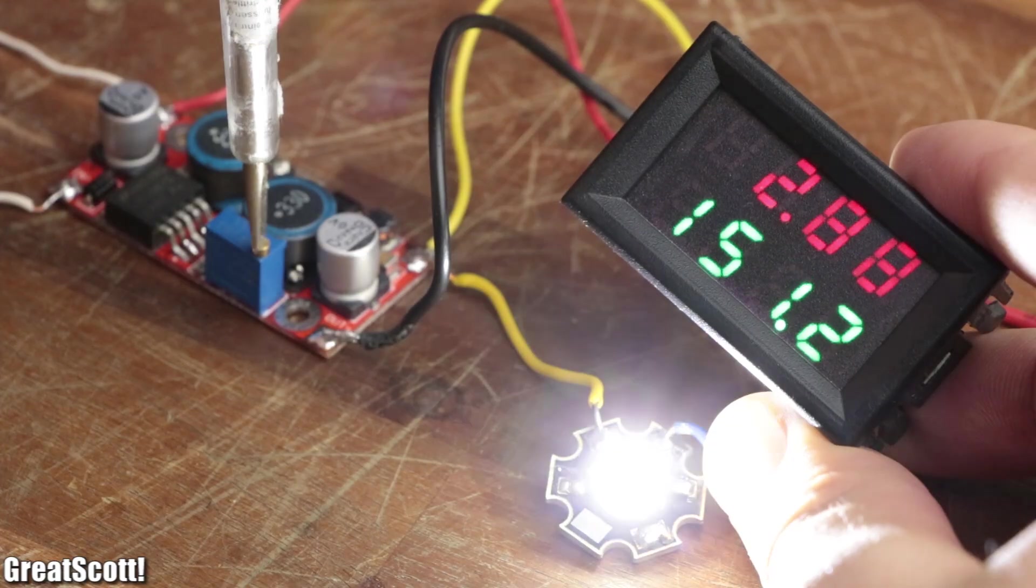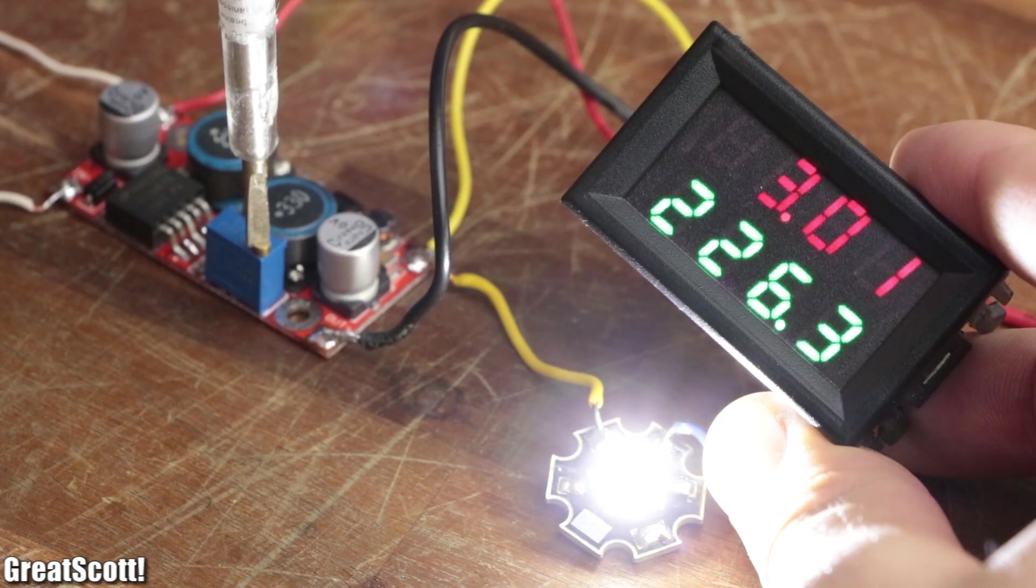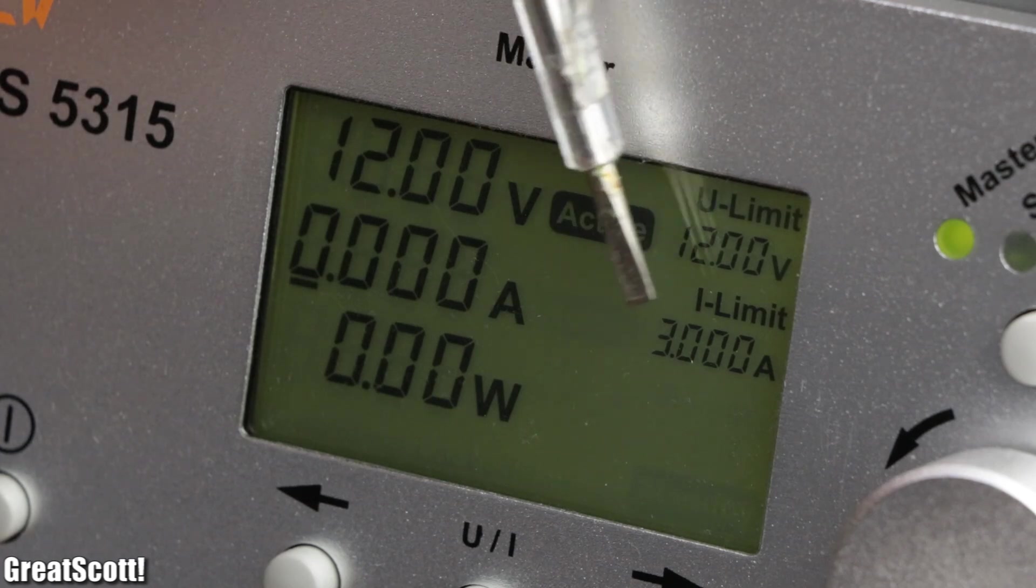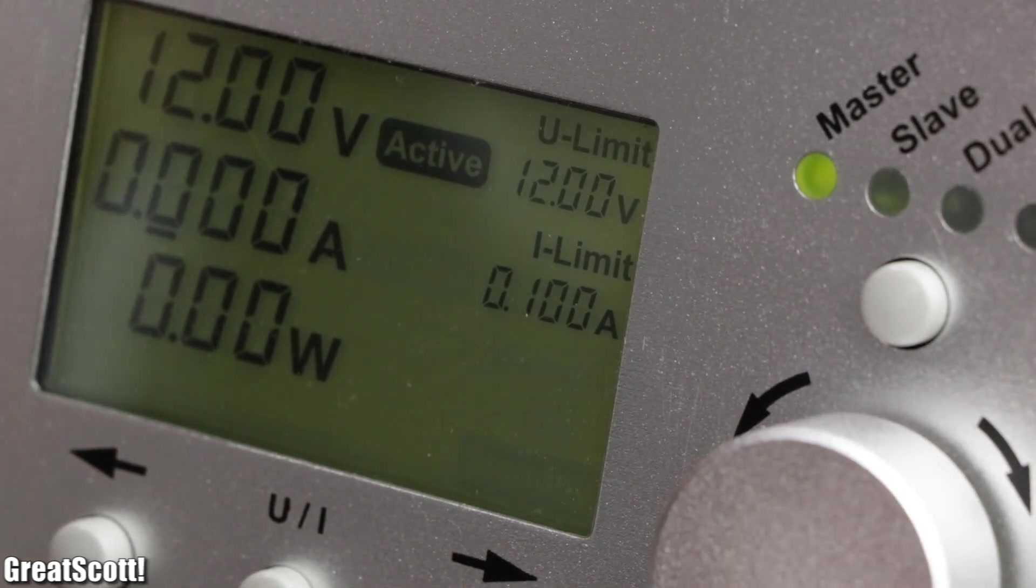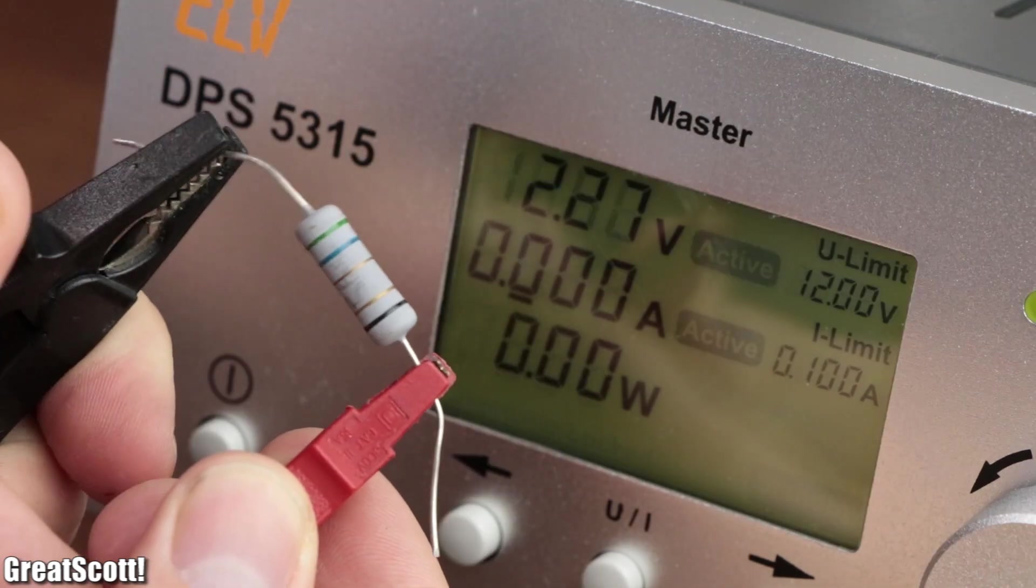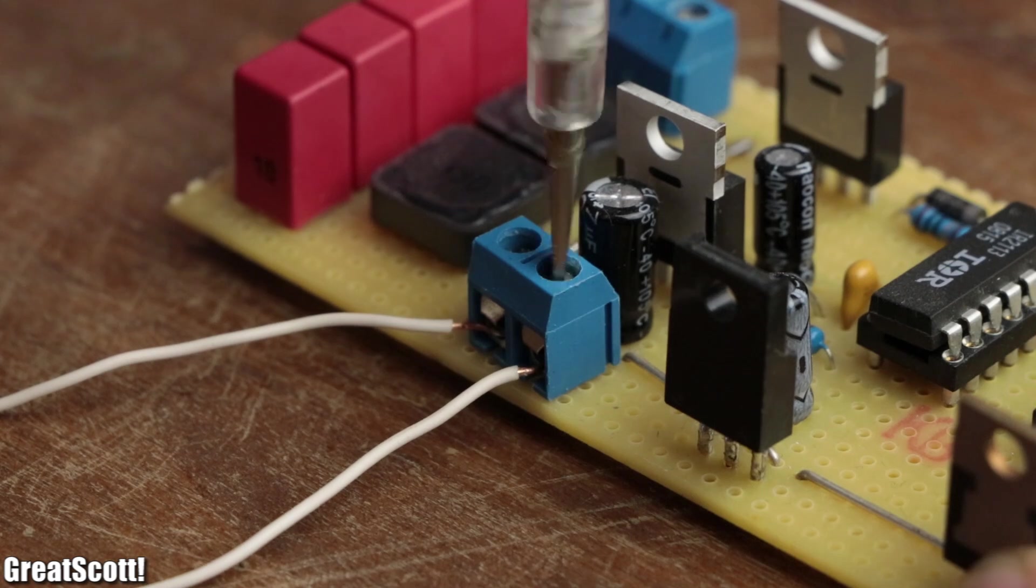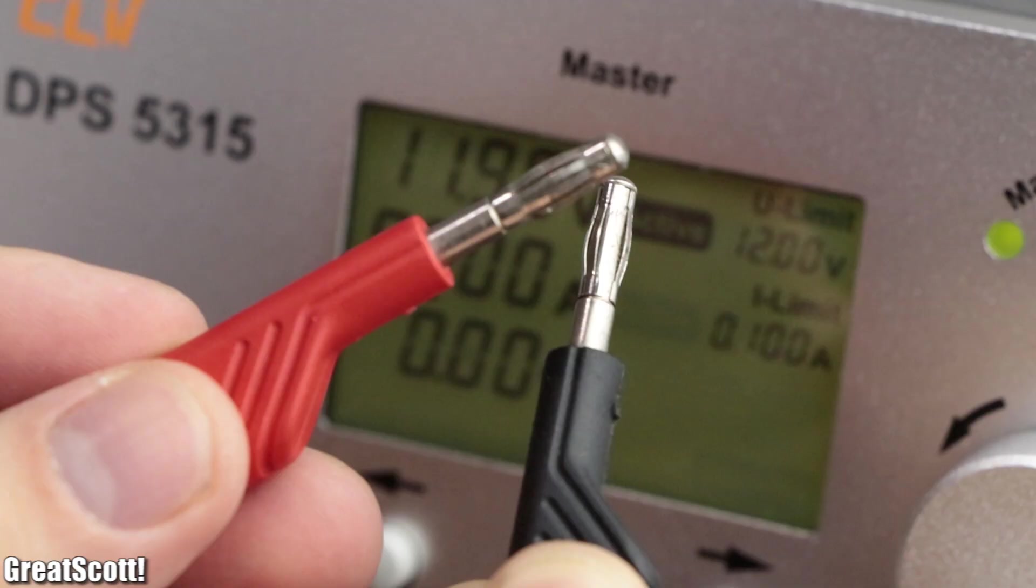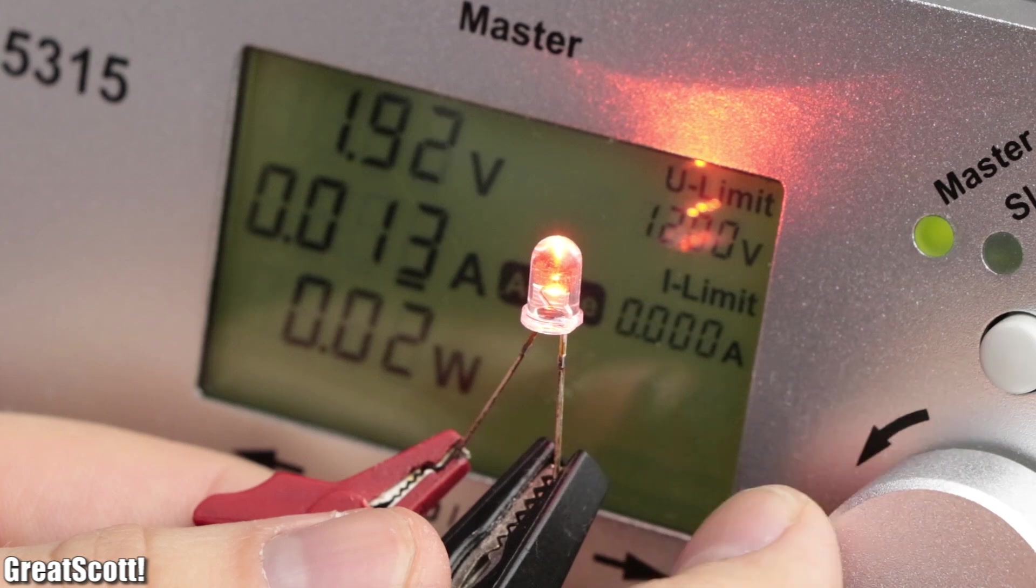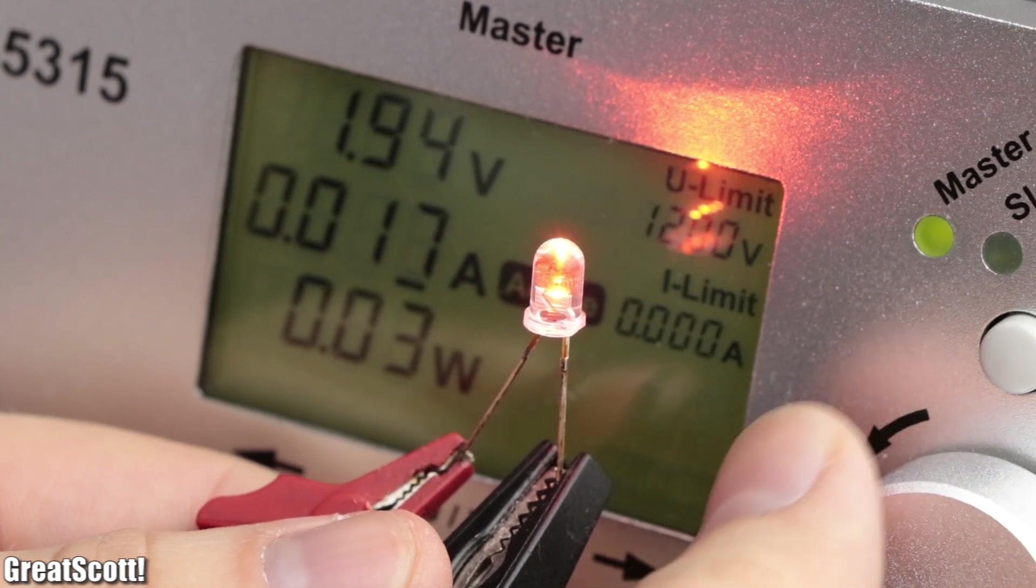The only remaining advantage a proper lab bench power supply has is its current limit feature. That means I can set a maximum output current, which no matter what load I attach will not be exceeded. By doing so you can save your faulty circuit from destruction, prevent short circuits, and can even use it as a constant current source.